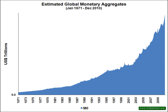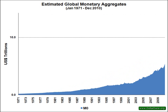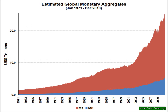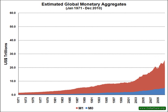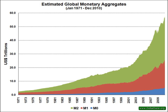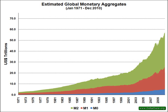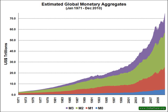Now we will add the global estimates for all demand deposits in order to compute M1. As you can see, the amount of money held in demand deposits exceeds that of currency in circulation by nearly 4 times — to this, an amount of money equivalent to 25 trillion U.S. dollars. We will now add savings accounts and small time deposits. This is M2. The amount of money in M2 is even greater than that in M1. Finally, we add in those monies captured under M3. This brings our estimate for the total amount of money to over 75 trillion U.S. dollars.